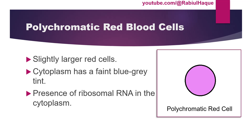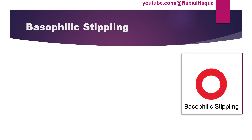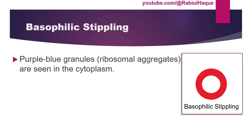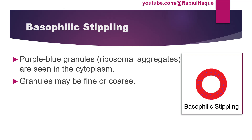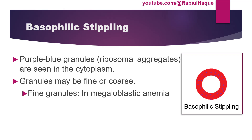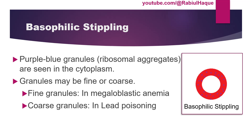Another term is basophilic stippling. Whenever we hear basophilic we should think something bluish — here purple-bluish granules representing ribosomal aggregates are seen in the cytoplasm of red blood cells. These granules may be fine or coarse. In megaloblastic anemia the granules are fine, whereas in lead poisoning the purple-blue granules are coarse in shape.